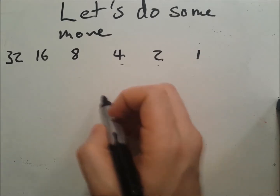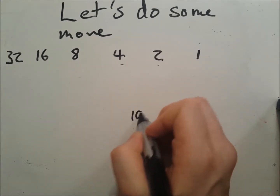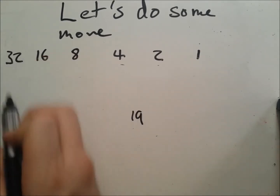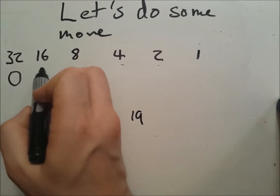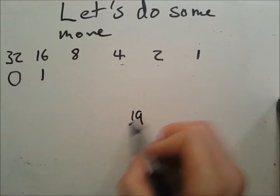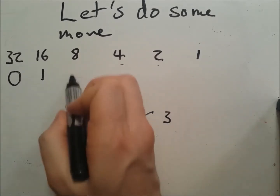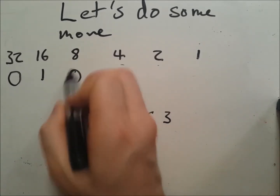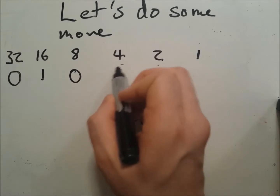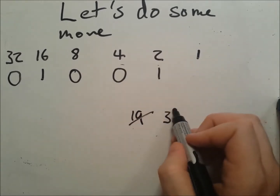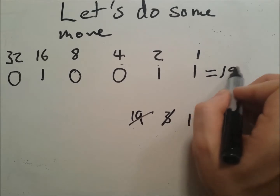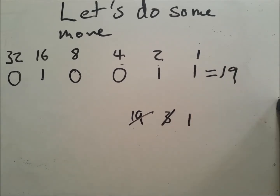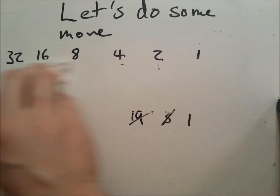Let's try something a bit more tricky — let's go for 19. There are no 32s in 19, but there is a 16. That leaves us with just 3 left over. There are no 8s in 3, no 4s in 3. But there is a 2 in 3, which leaves us with 1. So 1-0-0-1-1 equals 19.